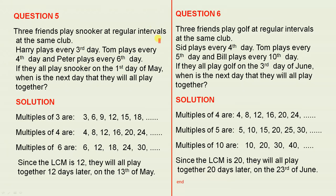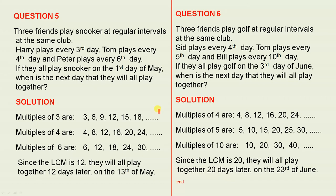Three friends play snooker at regular intervals at the same club. Harry plays every third day, Tom plays every fourth day and Peter plays every sixth day. If they all play snooker on the first day of May, when is the next day that they will all play together? This is a classic example where we can use the lowest common multiple. The multiples of 3 are here — of course, here we have the third day.